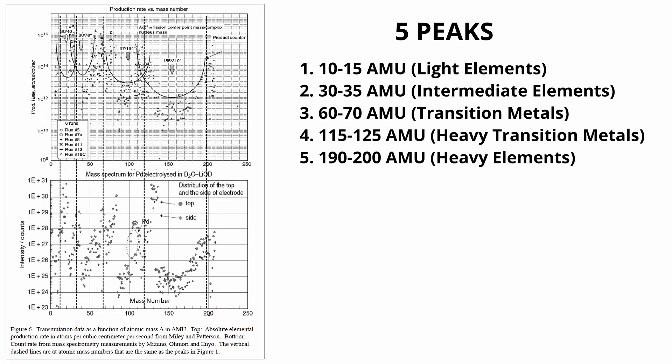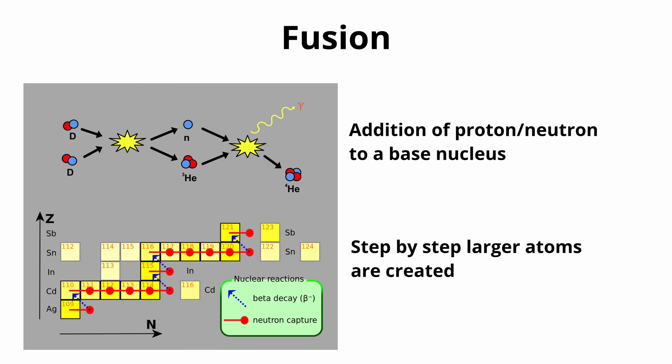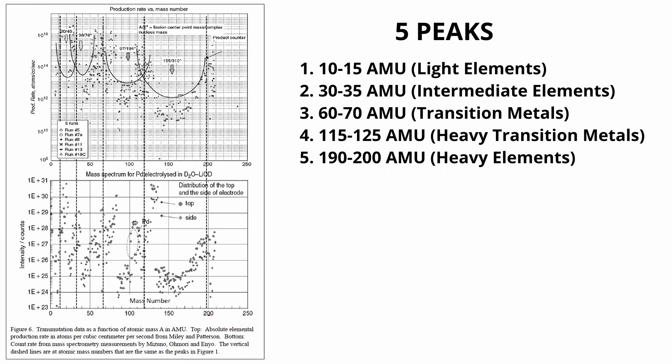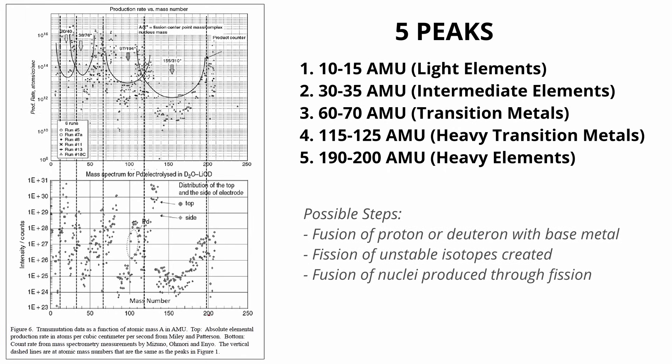The presence of five atomic mass peaks in LENR transmutation data suggests a nuclear process far more complex than conventional fusion or fission pathways. In traditional nuclear reactions, fusion typically involves the combination of small nuclei such as the addition of a proton, neutron or alpha particle to a base nucleus, while fission involves the splitting of heavier nuclei into smaller fragments. The clustering of LENR products at specific atomic masses hints at a process that involves a combination of fusion and fission-like mechanisms, with the potential for both the breaking off of larger fragments and the fusion of heavier nuclei into stable isotopes.